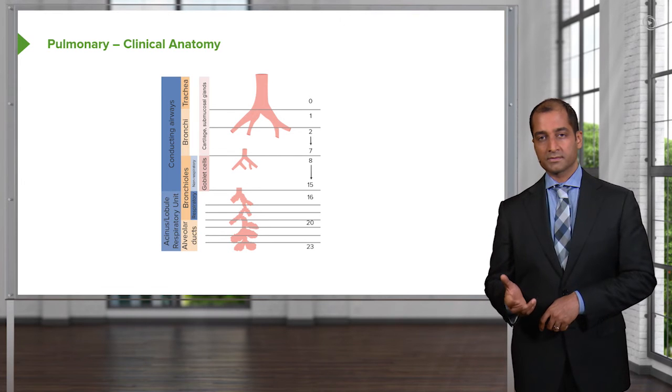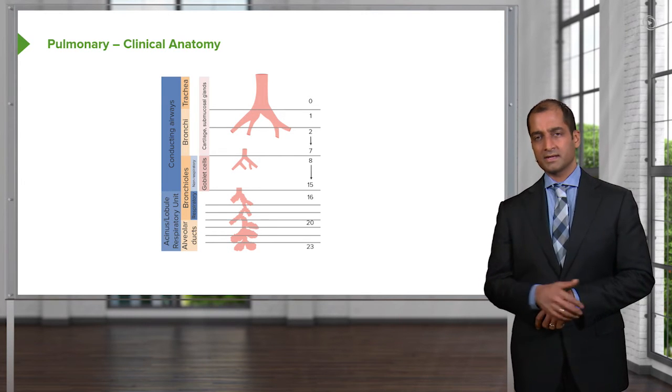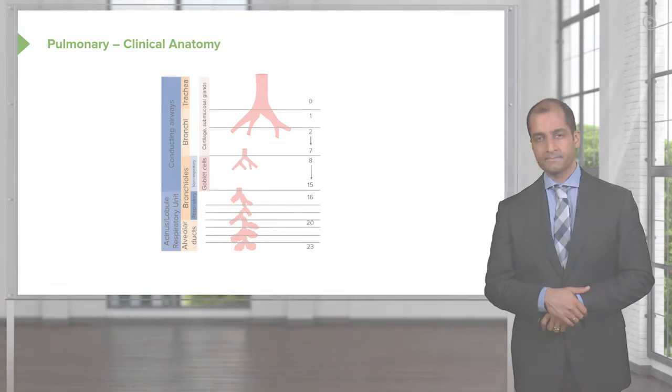And then as you go further distally, do you have cilia down in the alveoli? Of course you don't. Why is the alveoli so thin? Type 1, type 2 pneumocytes are present. We know it's squamous-like. It has to be very thin. Because what's across the alveolar membrane? Exactly. It's the pulmonary capillaries, responsible for quite a bit of gas exchange. So why would you want large columnar cells down there?